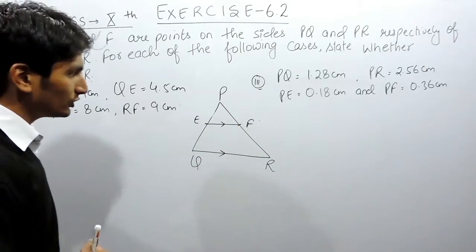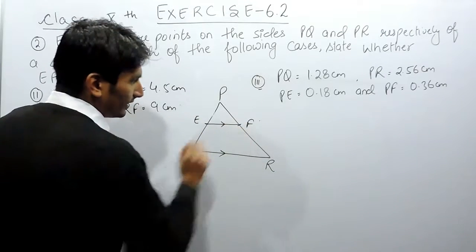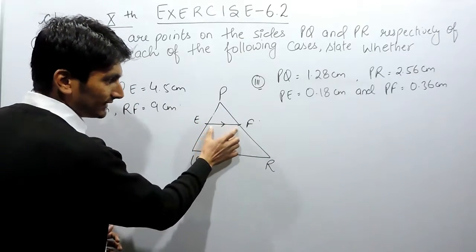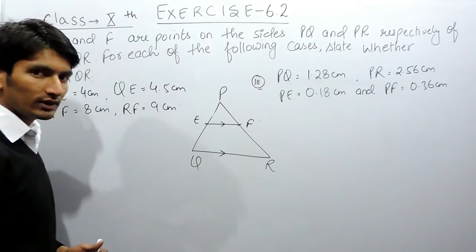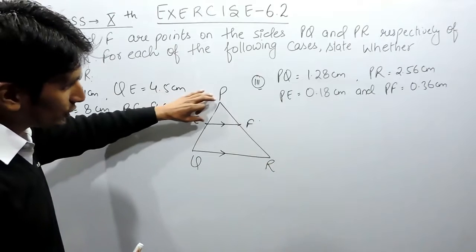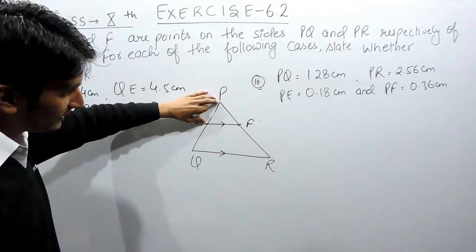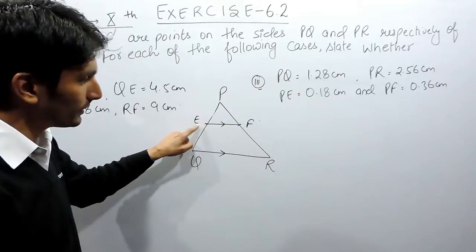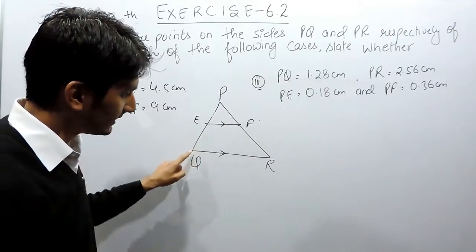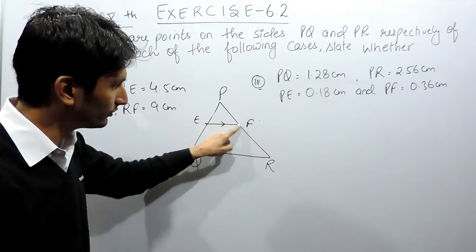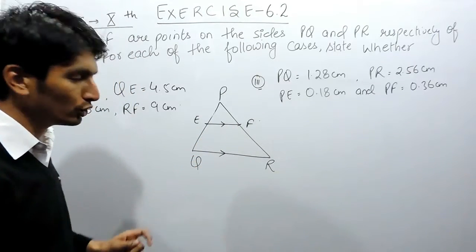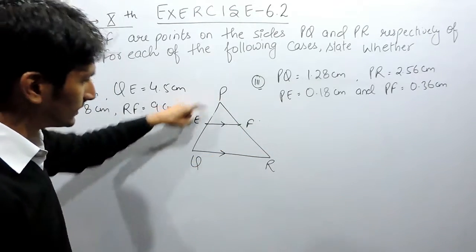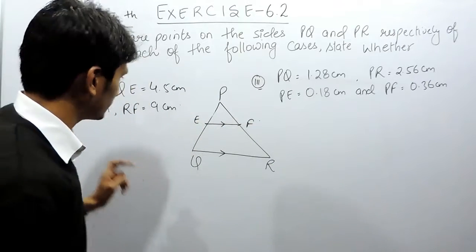According to the Basic Proportionality Theorem, if a line in a triangle cuts two sides in equal proportion, then this line must be parallel to the third line. That means if the ratio between PE and EQ is equal to the ratio between PF and FR, then according to the Basic Proportionality Theorem, this line EF is parallel to QR.